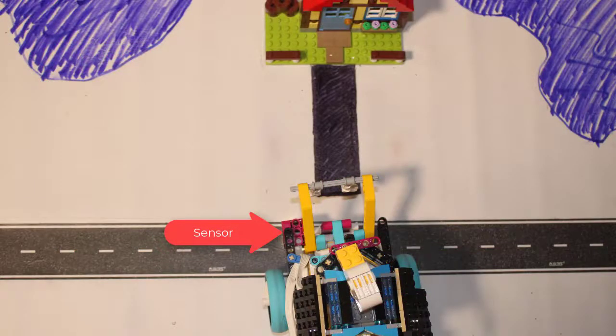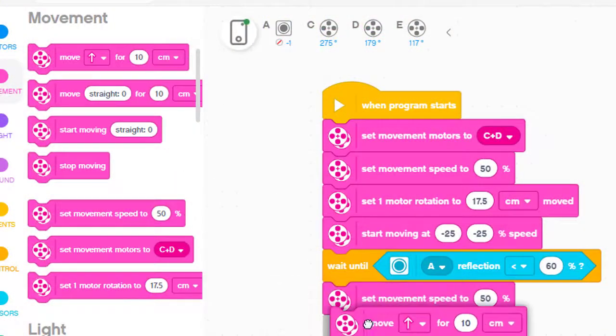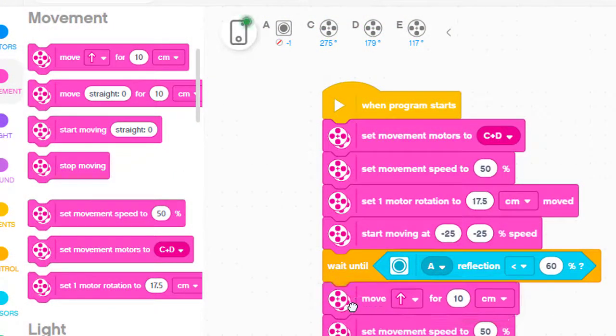Because the sensor is mounted on the front of the robot, it won't detect the road until its wheels have gone past the center of the road. To center it on the middle of the road, we add one more block to move the robot one and a half inches forward.